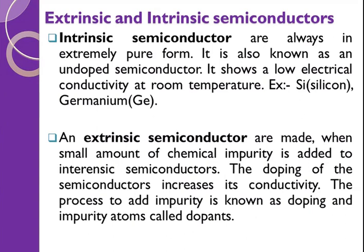At zero temperature, intrinsic semiconductors like silicon and germanium do not show conductivity. So we need to create conductivity by adding some impurity — such as arsenic or boron — which are either pentavalent or trivalent. The doping process adds impurity, and these impurity atoms are called dopants. That's why these semiconductors are called extrinsic semiconductors, and they have very important applications in semiconductor devices.